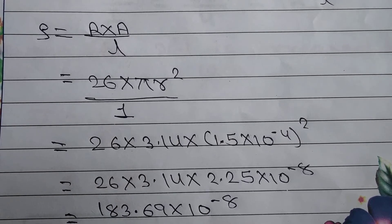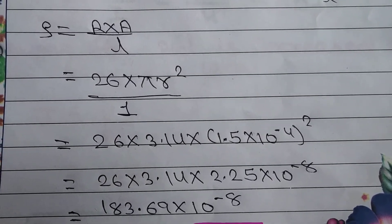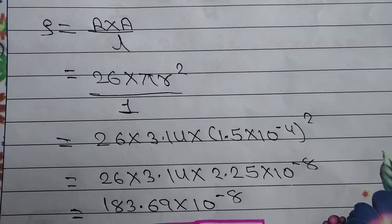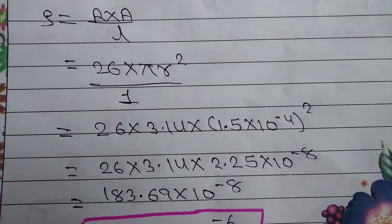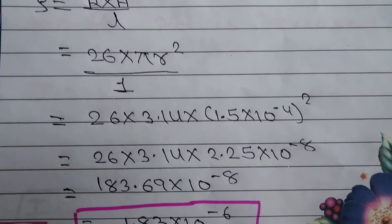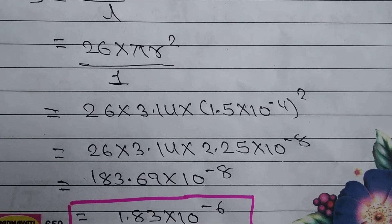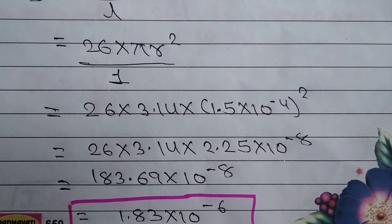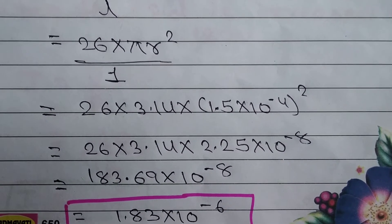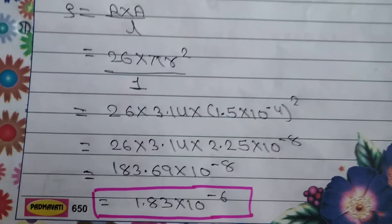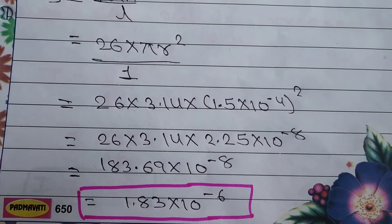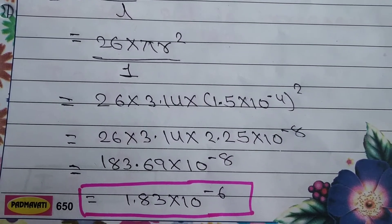Multiplying all the values: 26 into 3.14 into 2.25 equals 183.69. So resistivity equals 183.69 into 10 to the power minus 8. Converting to standard decimal form after one digit gives 1.83 into 10 to the power minus 6. So the resistivity of the material is 1.83 into 10 to the power minus 6.